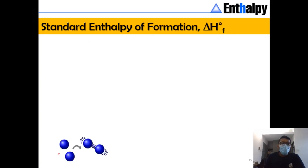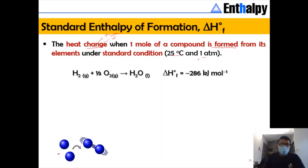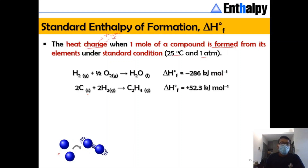Enthalpy of formation — we are referring to the standard enthalpy of formation. The standard enthalpy of formation is the heat change, which can be a positive or negative value, when one mole of a compound is formed from its elements under standard conditions: 25°C and 1 atm. For example, one mole of H₂ reacting with O₂ to form one mole of water has ΔHf° = −286 kJ/mol, or carbon reacting with hydrogen gas to form one mole of C₂H₄ has ΔHf° = +52.3 kJ/mol.